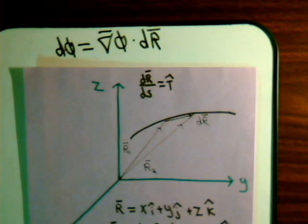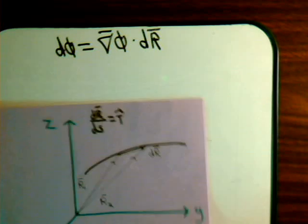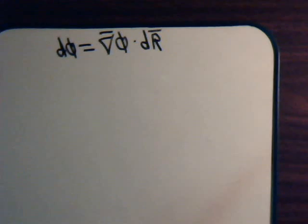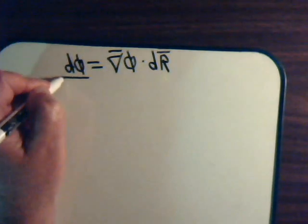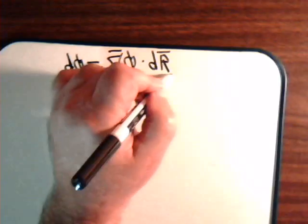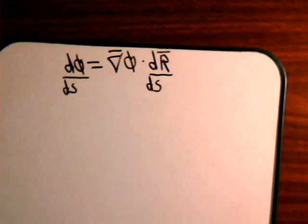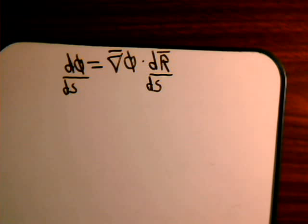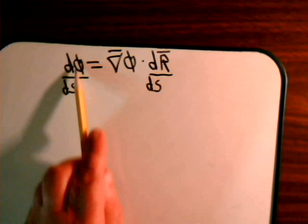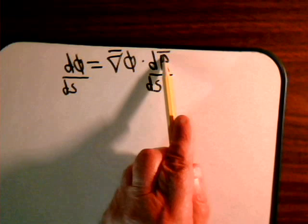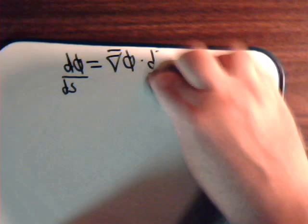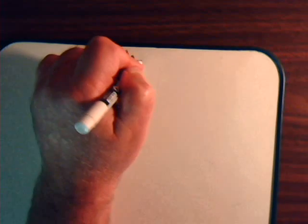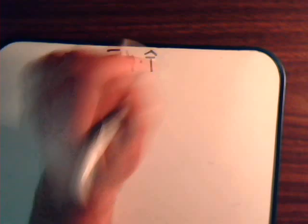So it's a unit tangential vector. So now let's go back to our equation up here and divide both sides of the equation by DS. Then we have this expression. This means that this is the rate of change of the scalar in the direction of this unit tangential vector.